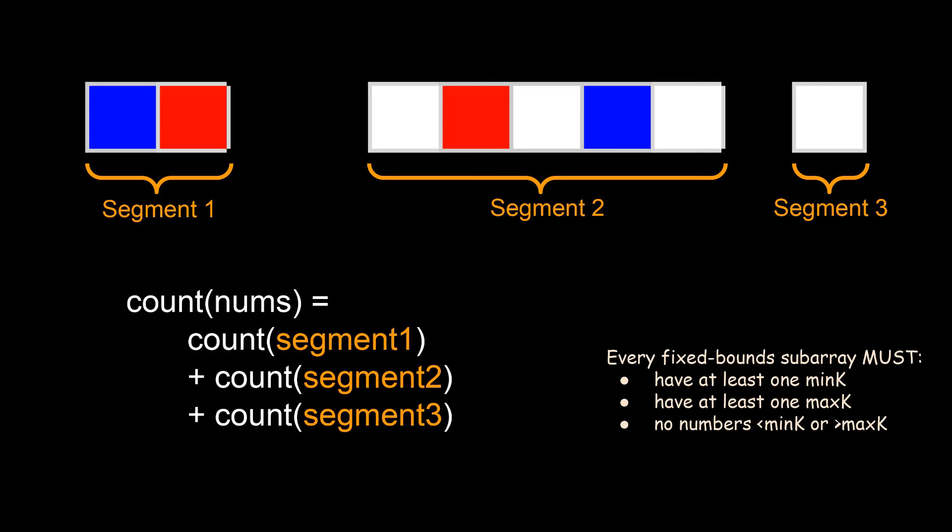How do we count how many valid subarrays are there in each segment? Well, let's hang on to our heads for that one. Now, I want you to appreciate how much we have taken a large complicated problem at the beginning and broken it down and simplified it so that we end up with smaller, more solvable problems. This is a very common strategy in programming. You start with a difficult problem, you simplify it, and you tackle each simple problem individually before putting everything back together again.